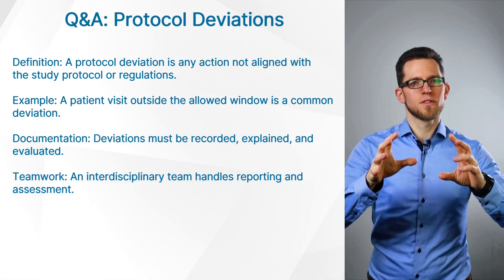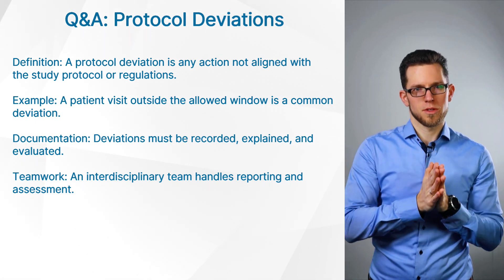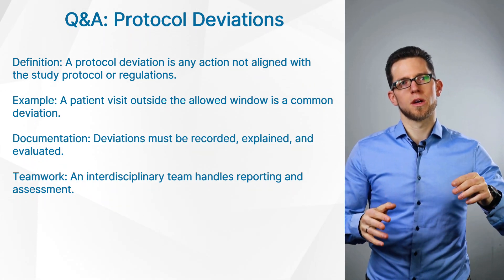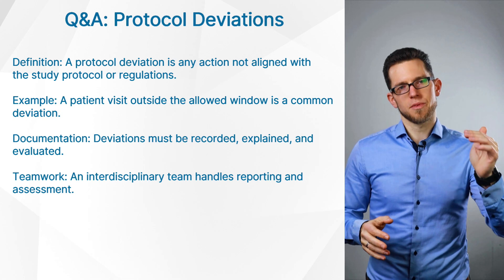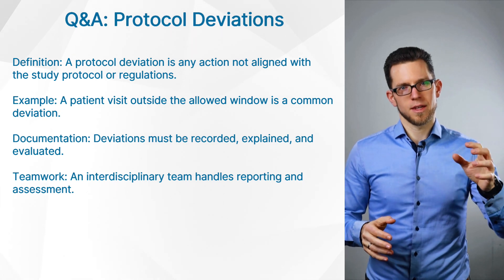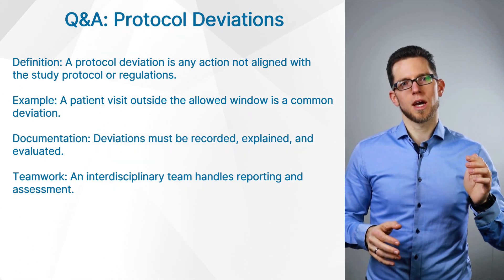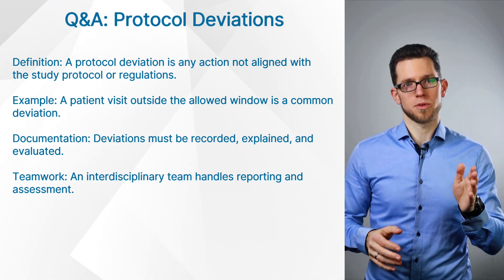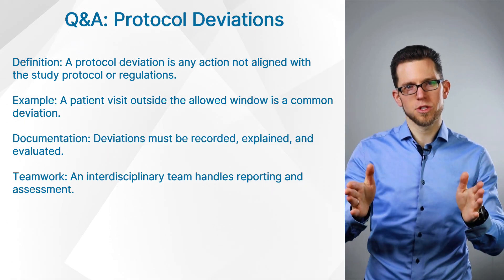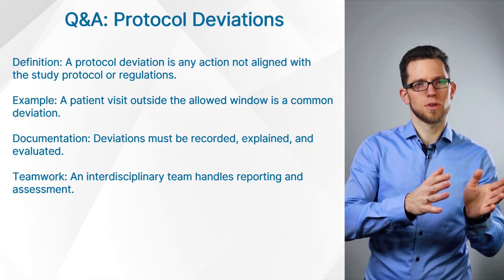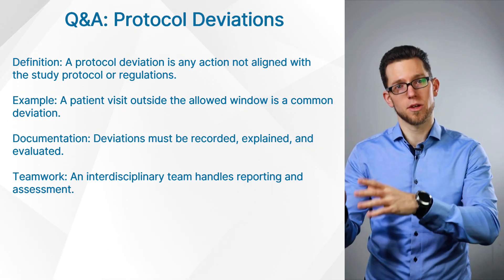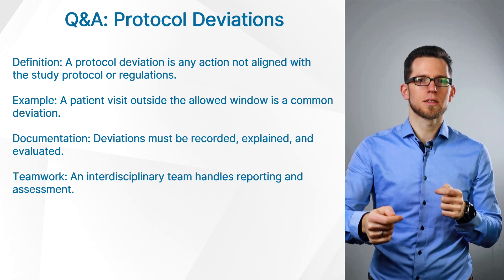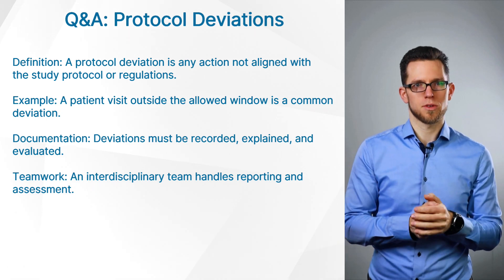First of all, let's define what a protocol deviation is. A protocol deviation is where something was done in a clinical trial which is not in alignment with regulations or with the study protocol. We usually define very stringently what has to happen, what may not happen, and if this was deviated against, it becomes a protocol deviation.